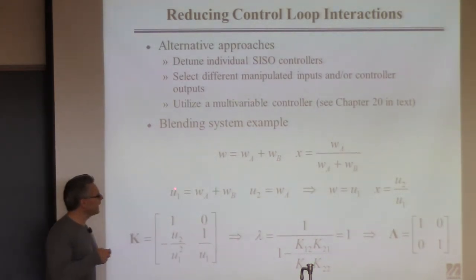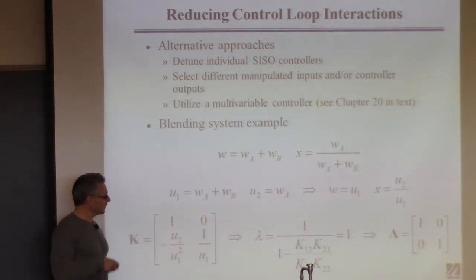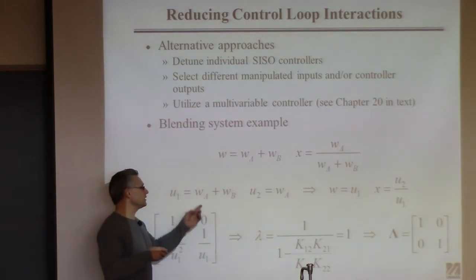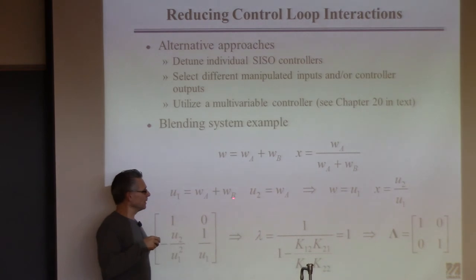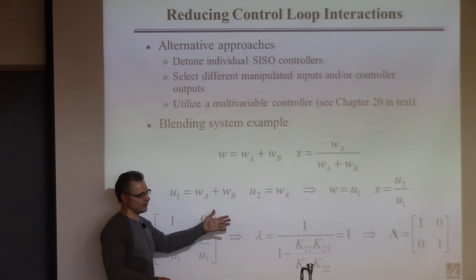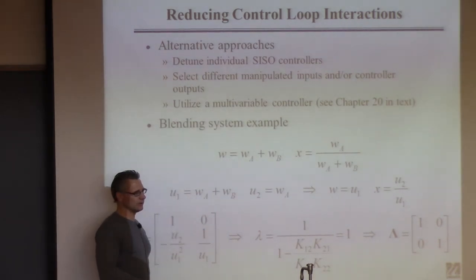So if I redefine the input like this then I end up getting a gain matrix that has a zero there, and if you do that then you'll get an RGA that looks like this and there'll be no interactions between the controllers. So the best strategy for this problem actually is not to try to pair the variables together in a certain way, it's just to redefine one of the inputs to be the sum of the two flow rates and then you'll minimize all the interactions. You can look at the details if you like.